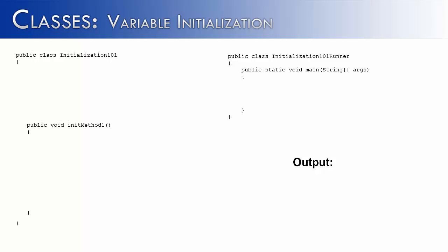So to do that, I've created two classes, initialization101 and initialization101Runner. And inside of the initialization101 class, I've created the method initMethod1. And what we're going to do inside of that method is create two variables, num3 and num4.